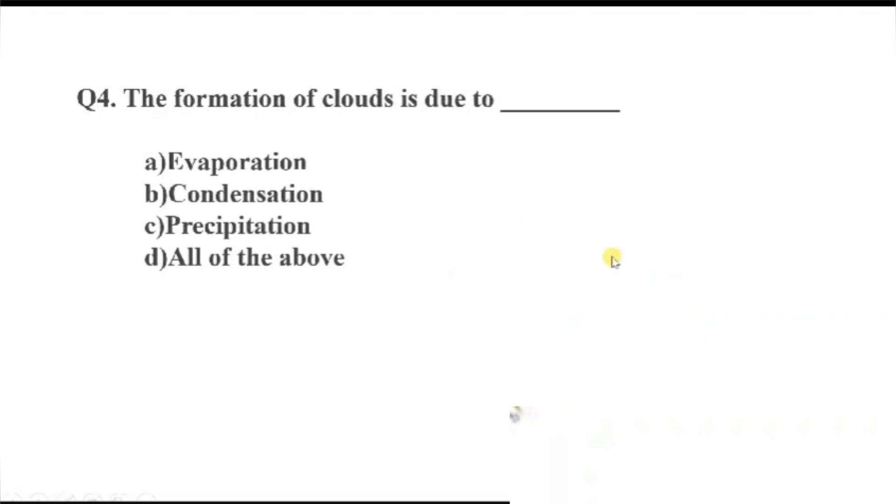Question number 4. The formation of clouds is due to dash. Option A, evaporation. B, condensation. C, precipitation. D, all of the above.